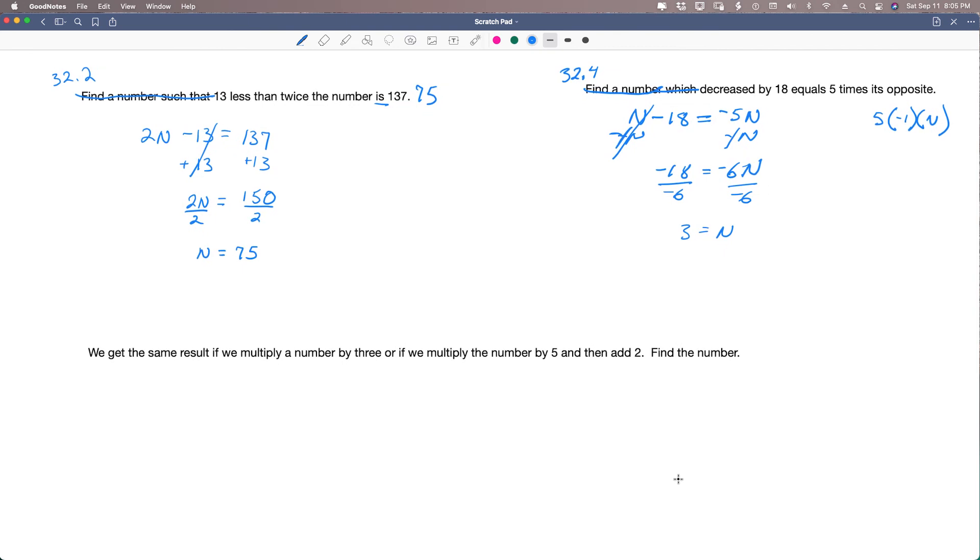Last one, 32.5. We get the same result if we multiply a number by 3, or if we multiply the number by 5 and then add 2. Find the number. So let's look at that one. We get the same result if we multiply a number by 3, or is our equal sign. So it's telling us this side or this side. And it's the same result if we do this one or this one. So that means that that equal sign needs to go where the or is.